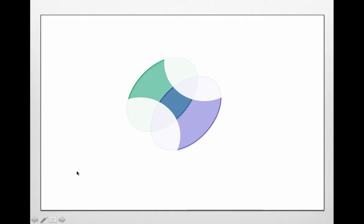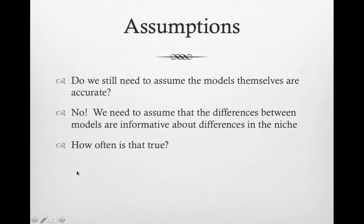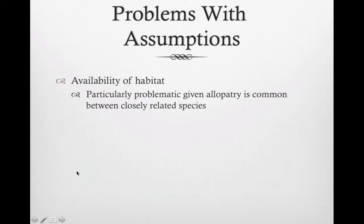So this is kind of a weird thing. You don't have to assume the models are accurate. You have to assume the patterns of similarity and differences between the models are accurate, which is kind of tough to wrap your brain around. And you can ask the question, how often is that true? We really don't have any idea. That's why I'm jumping ahead here.